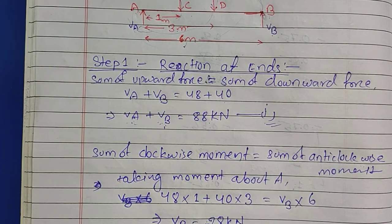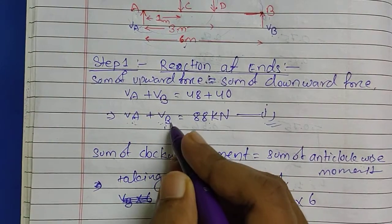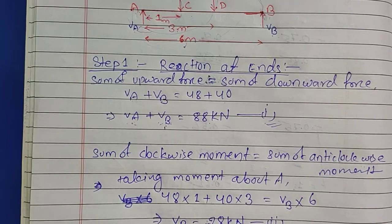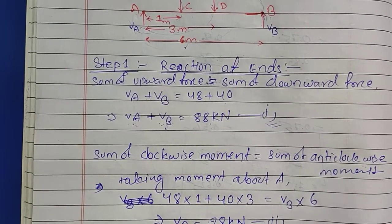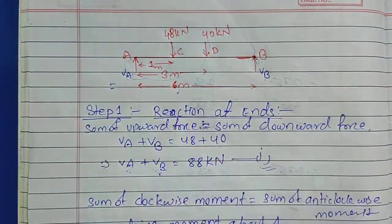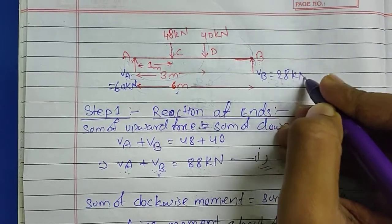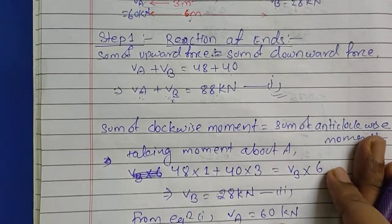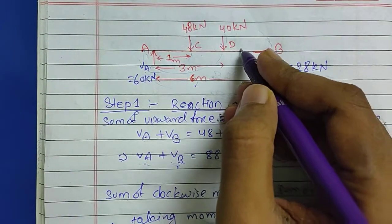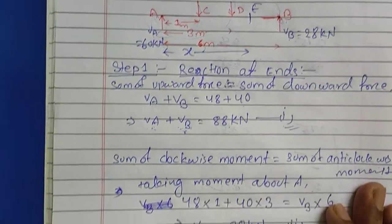Substituting VB equals 28 kilonewton into Equation 1, we get VA equals 60 kilonewton. So our reaction values are VA equals 60 kilonewton and VB equals 28 kilonewton. Now moving to Step 2, let's consider a point E at distance x from A.